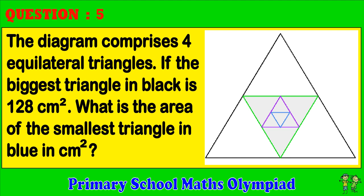Question 5: The diagram comprises four equilateral triangles. If the biggest triangle in black is 128 cm squared, what is the area of the smallest triangle in blue in cm squared?